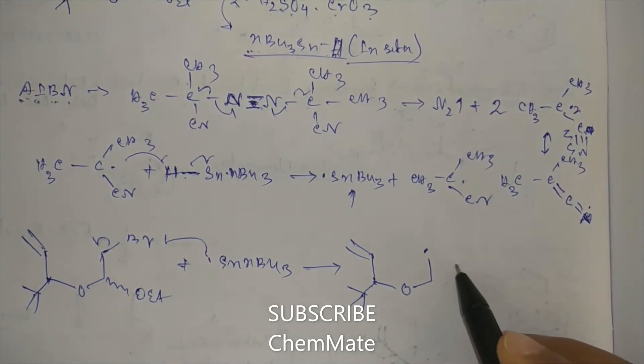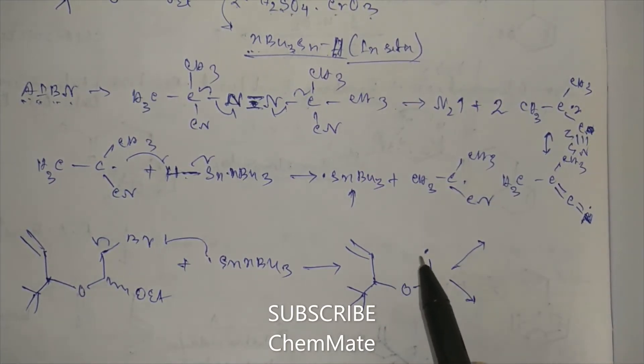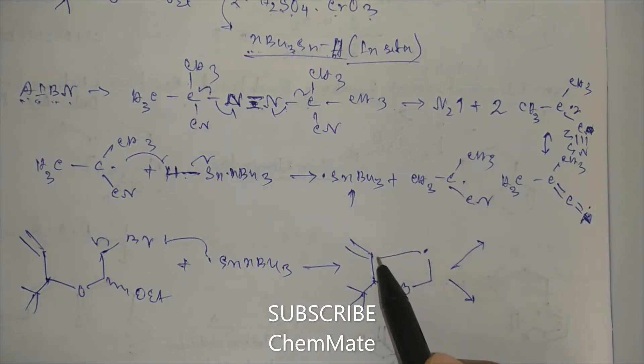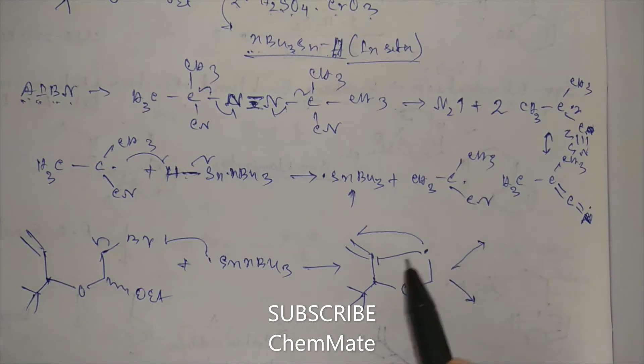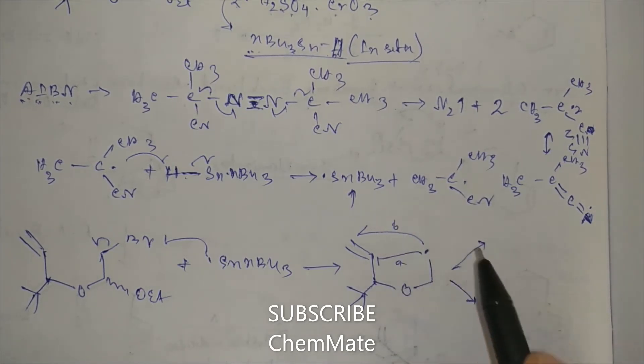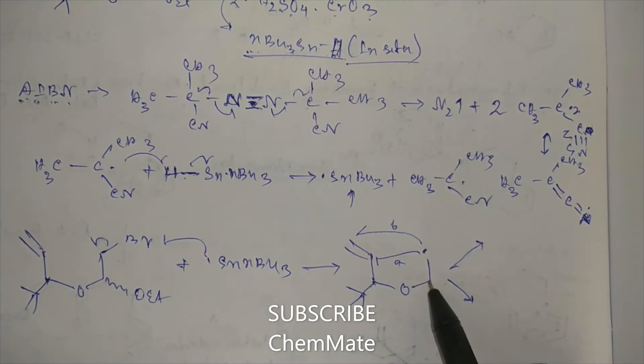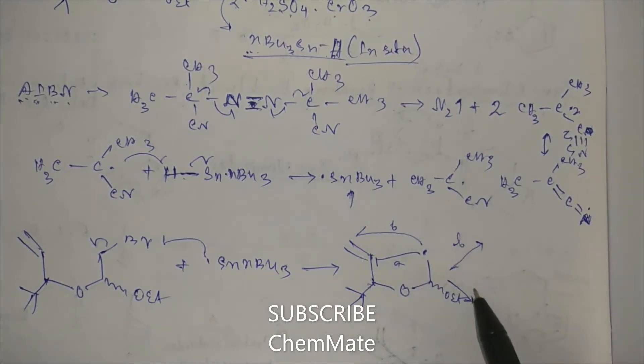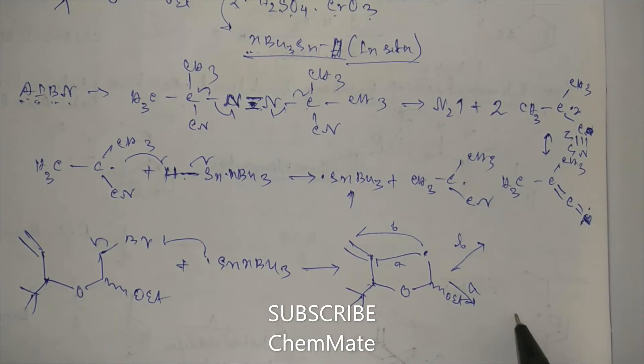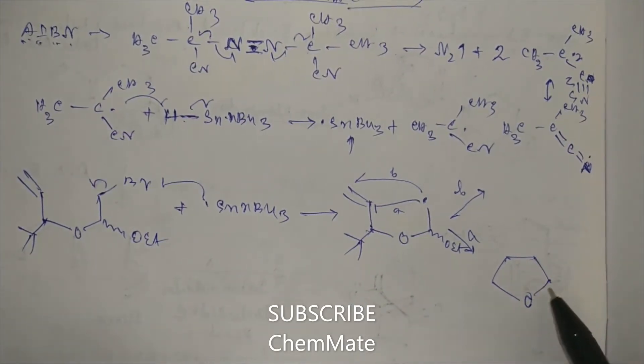Now from this radical, two addition reactions can take place. It may attack into this end or it may attack into this end. Let's say this is A, this is B. So from A attack, we will get one with an OEt group - a 5-member ring. Let's say this is B attack, this is A attack. So a 5-member ring will be formed here with OEt.